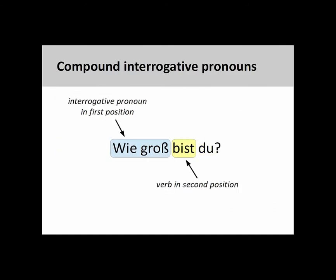We can use any adjective following 'wie' to create a compound interrogative pronoun. Here, for example, you see the adjective 'groß' (tall/large) used to inquire about the height of a person: 'Wie groß bist du?' (How tall are you?)